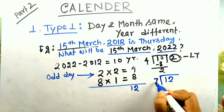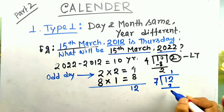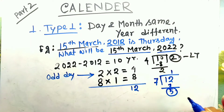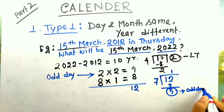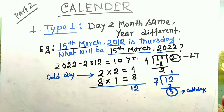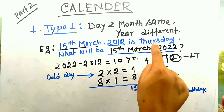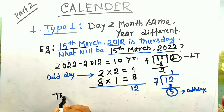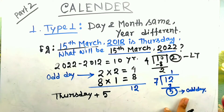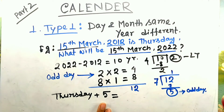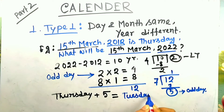Since 12 is greater than 7, divide 12 by 7: 7 ones are 7, remainder is 5. So 5 is your final odd day count. The given day was Thursday, so Thursday plus 5 equals Tuesday. So Tuesday is your answer.